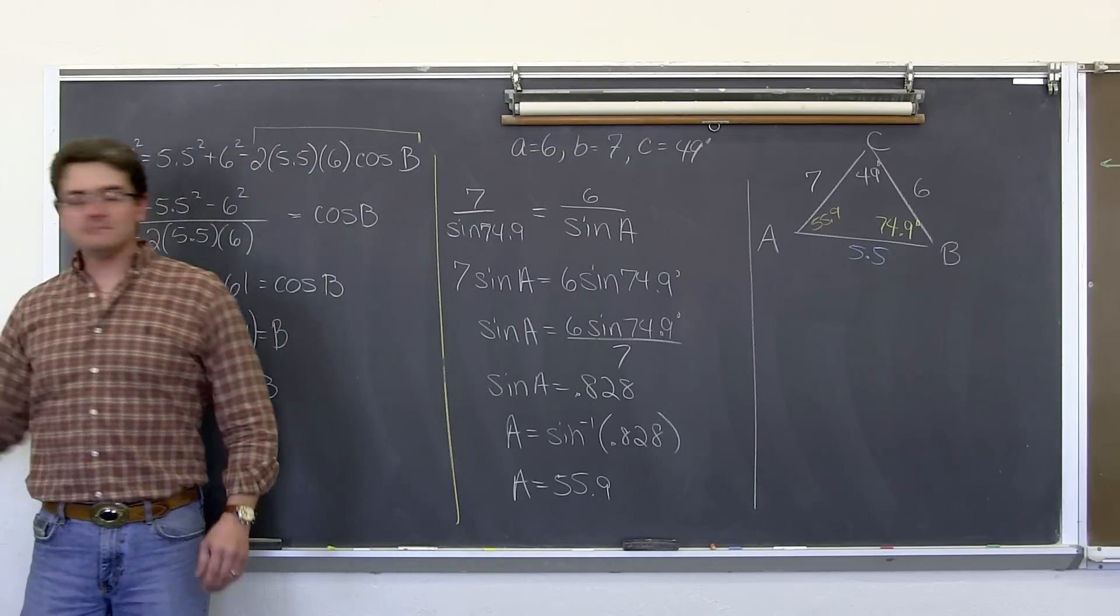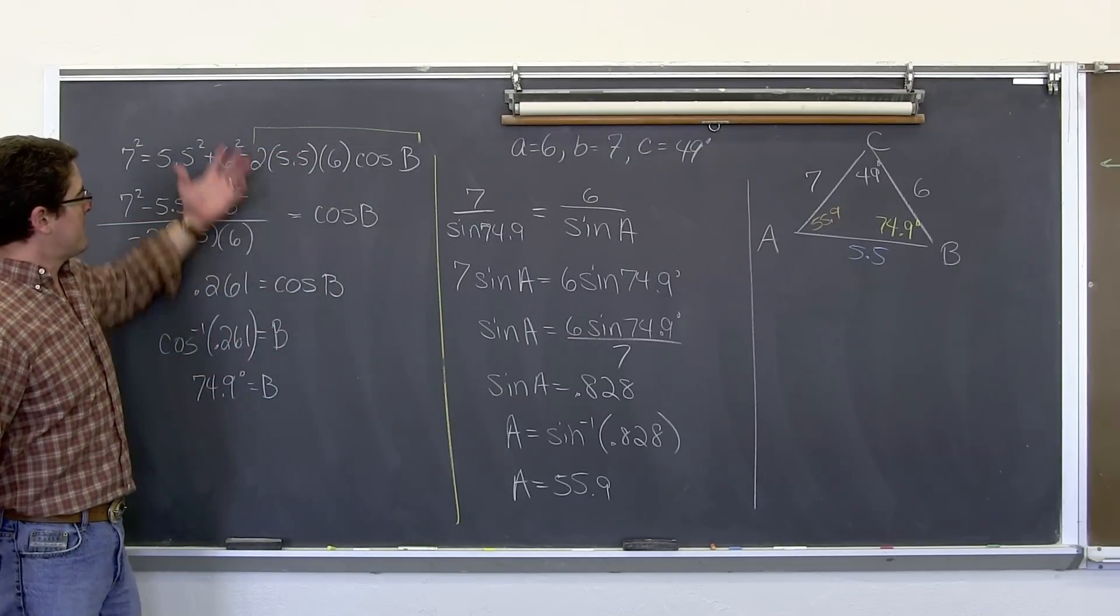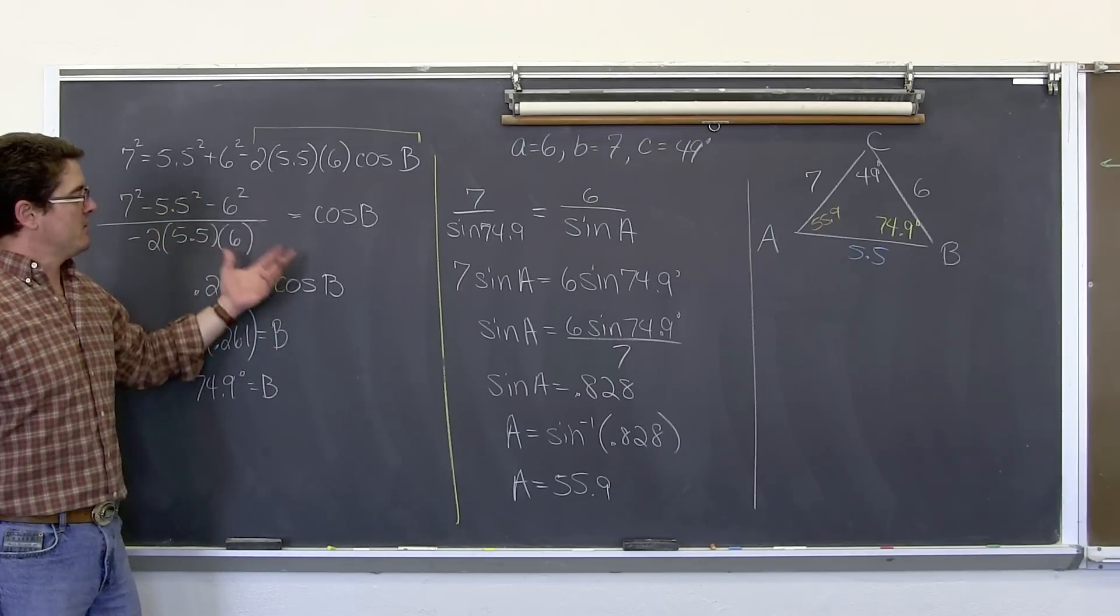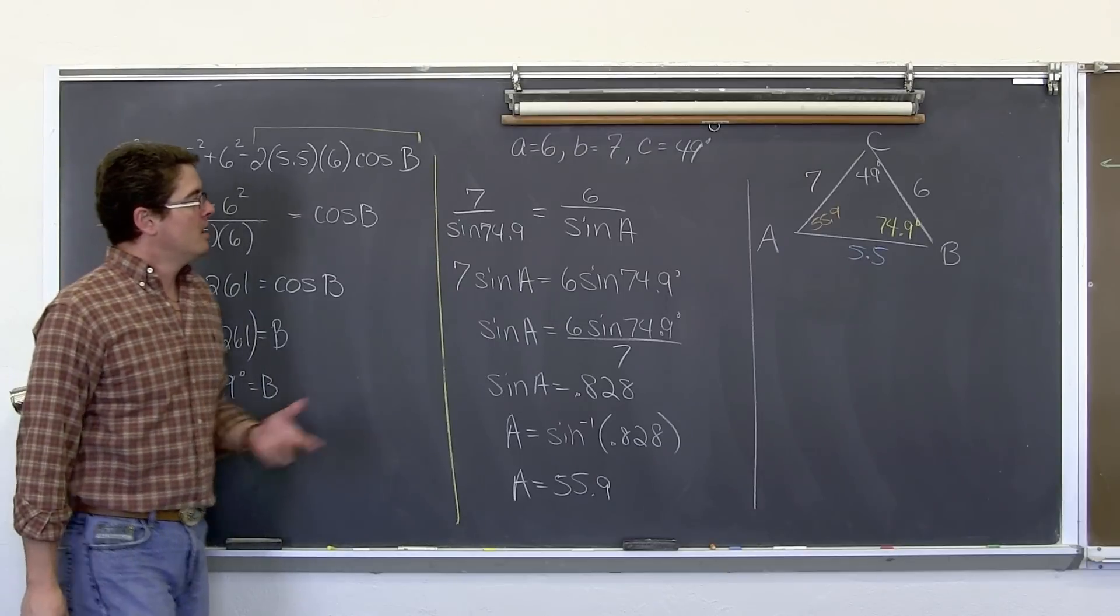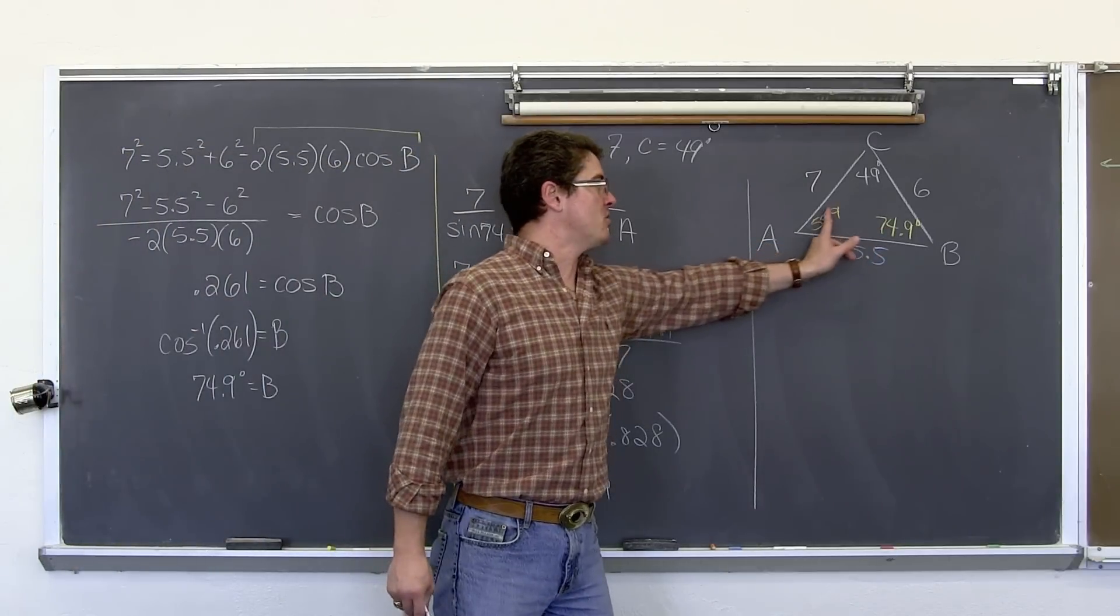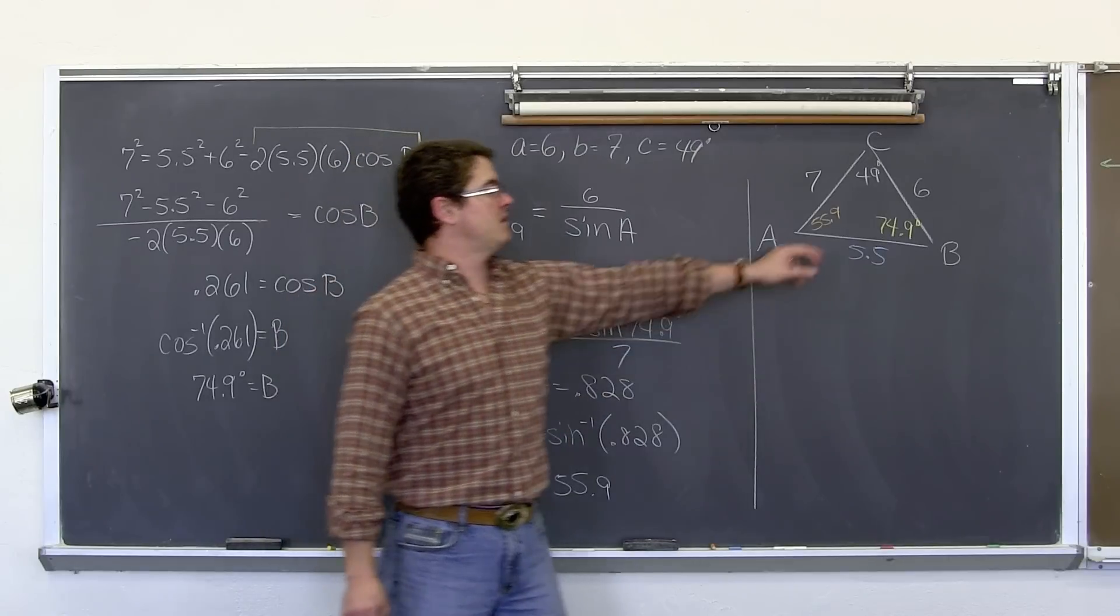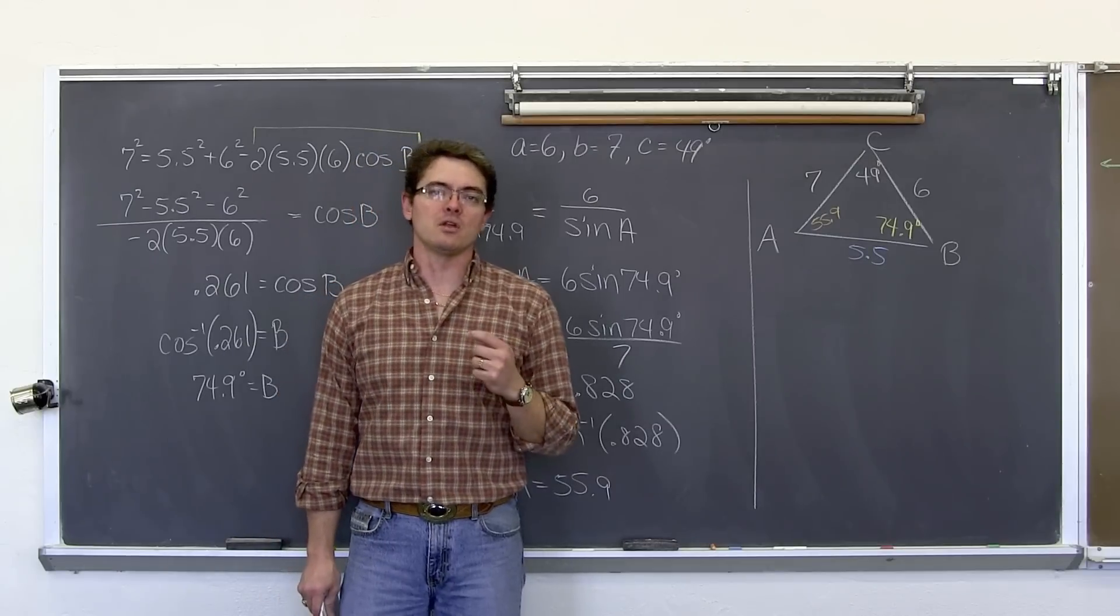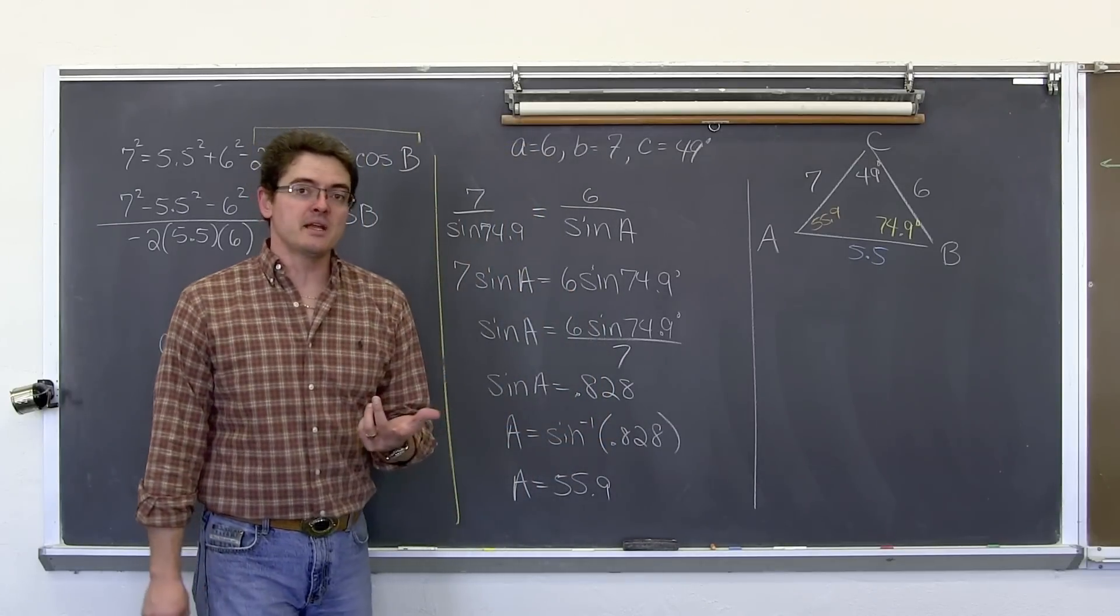So again, you can find any measurement you want, both sides or angles using law of cosine. Well, I guess not all the time, but occasionally. But when you are looking for those missing angle measures, you do have a choice, but please do not try and find the angle opposite the largest side using law of sine. Because if you do, you could possibly get an incorrect answer. Again, if that angle happened to have been 97 degrees, law of sine would have come out to be 83 degrees.